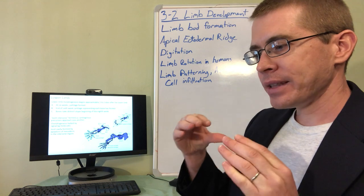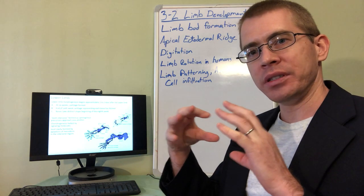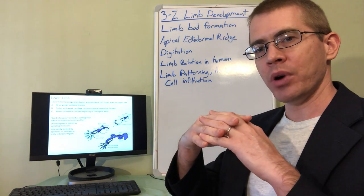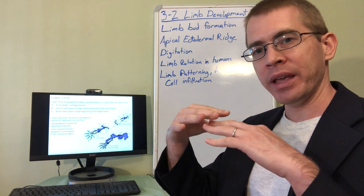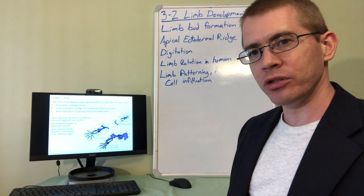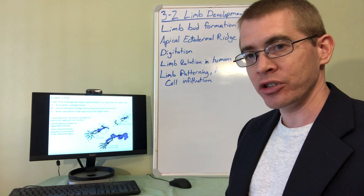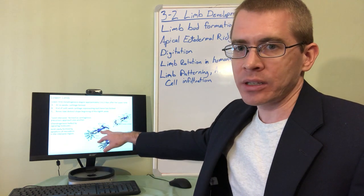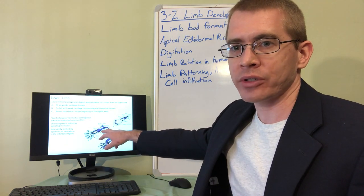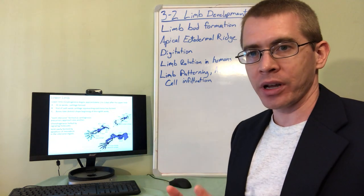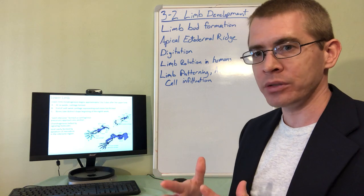So as that mesenchyme condenses and begins to form the bone models, as the individual bone models expand and grow, they start to get close to, almost bump into the adjacent bones, the adjacent bone models. When that happens, signaling molecules from the chondrocytes, the ossifying chondrocytes, are detected by the neighboring chondrocytes from different bone models.